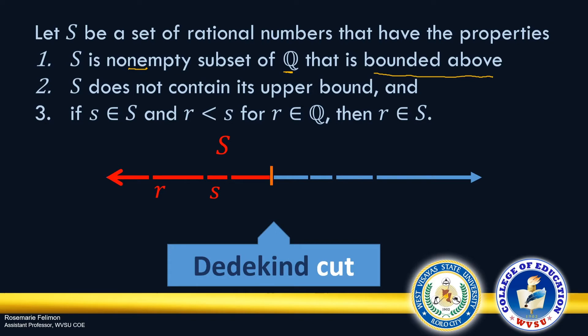And number 3, if S is an element of the set S, and we have here R, which is a rational number, is less than that element S, then we say that R must also be an element of the set S.